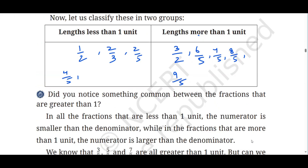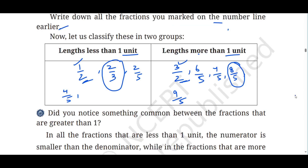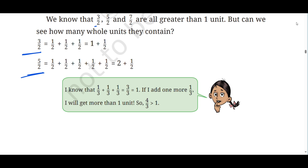For fractions less than 1, the measurement is less than 1, meaning the numerator is smaller than the denominator. For fractions greater than 1 — like 3 upon 2 and 5 upon 2 — the numerator is greater than the denominator.